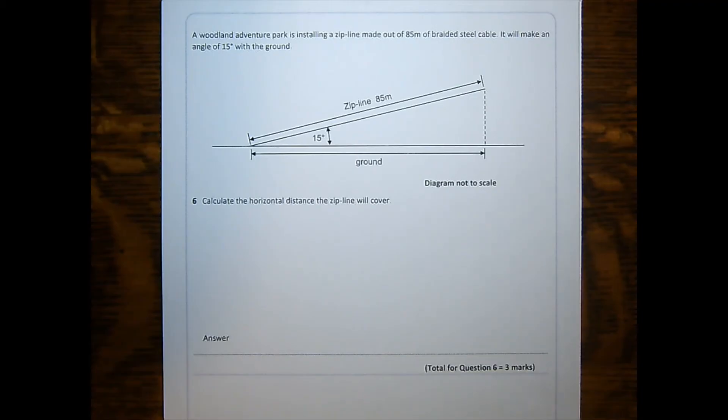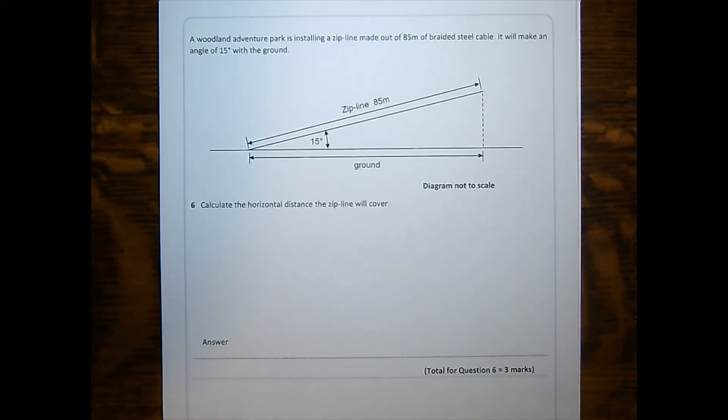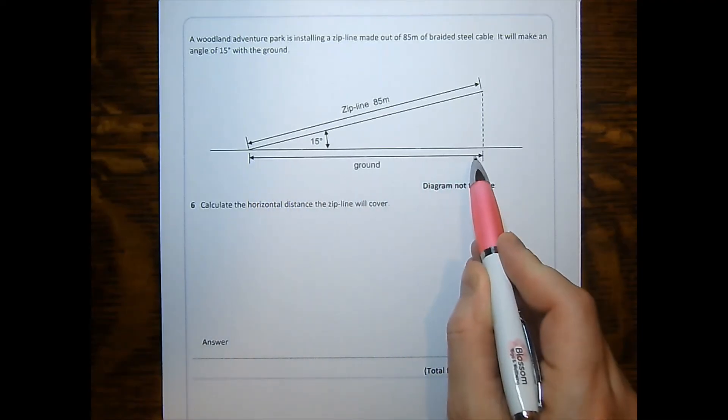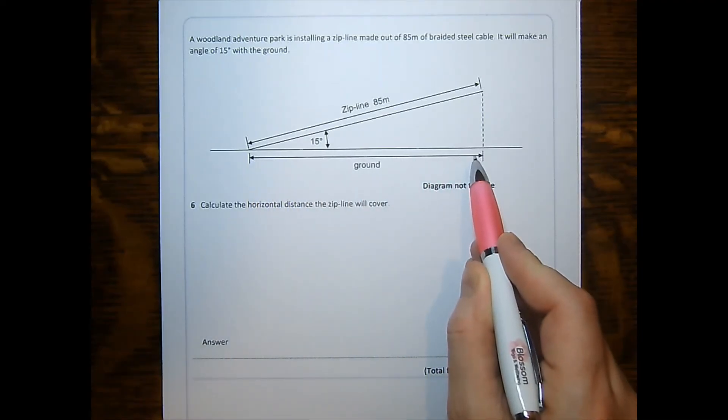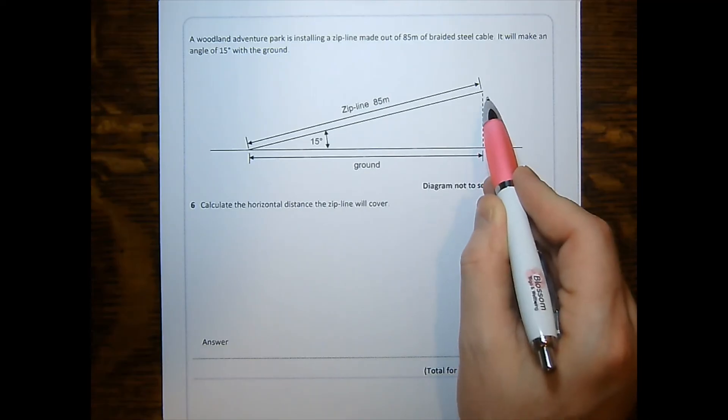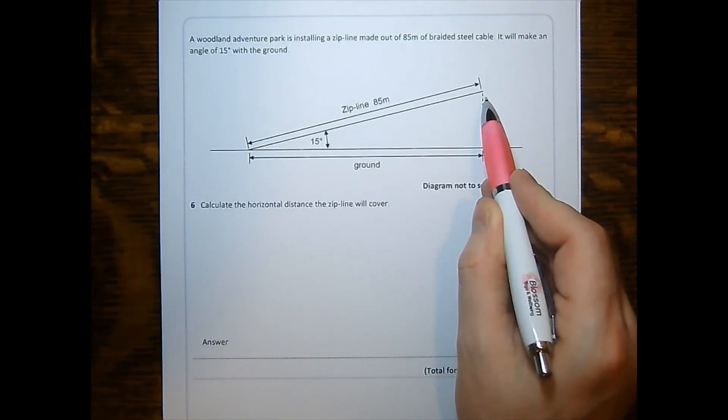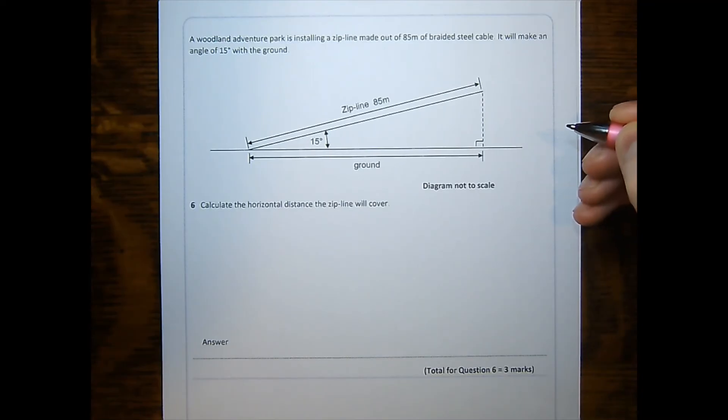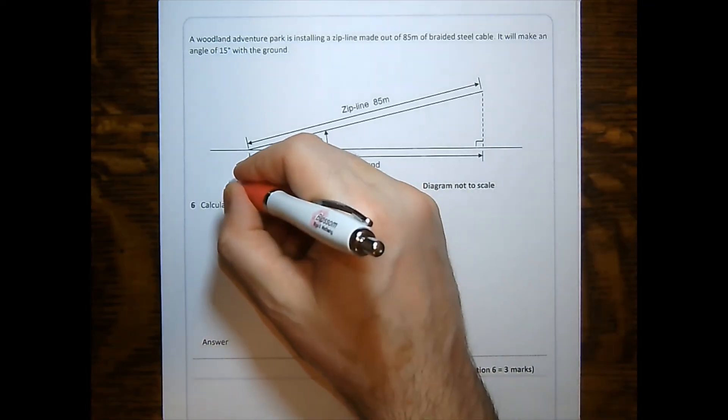In question six, we're asked to work out the horizontal distance that travels across the ground. The horizontal distance will start directly below the point directly underneath. Hence, this would be a right angle that is directly below. Therefore, we're looking at SOH CAH TOA.